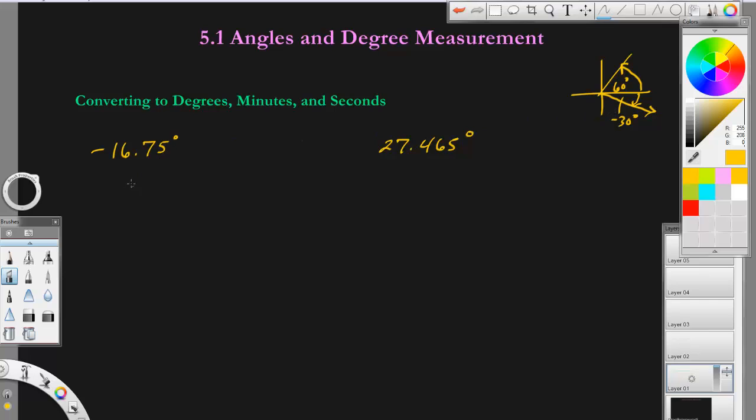To convert this to degrees, minutes, and seconds, here's what you do. You take the negative 16, and then you take the decimal 0.75 and multiply it by 60. So we're going to take our calculator and type in 0.75 times 60, and you're going to get 45.